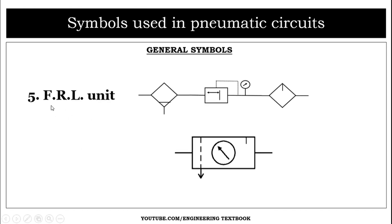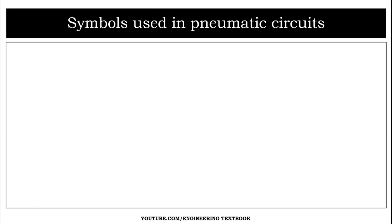The FRL unit stands for Filter, Regulator, and Lubricator. In the combined symbol, the first part represents the filter, the circular section with an arrow represents the regulator, and the small line represents the lubricator. This is the combined symbol of the FRL unit.